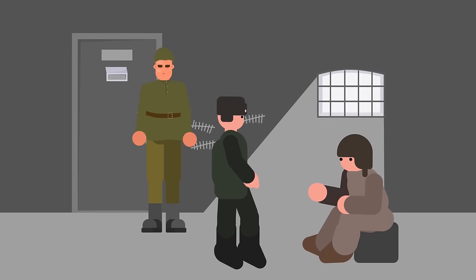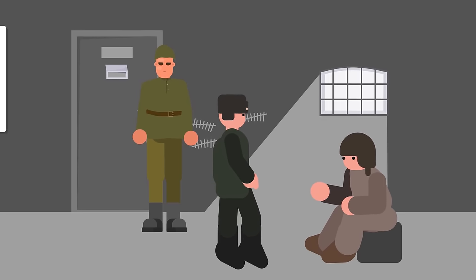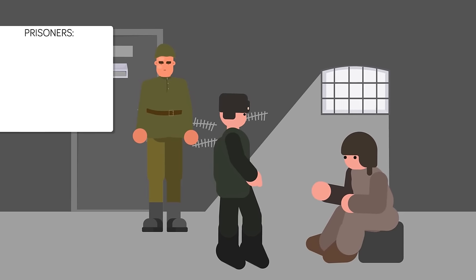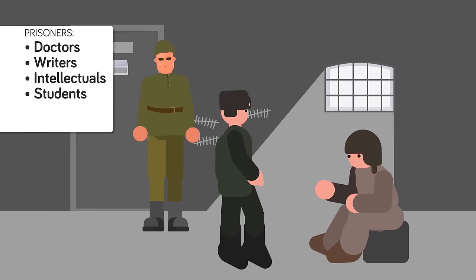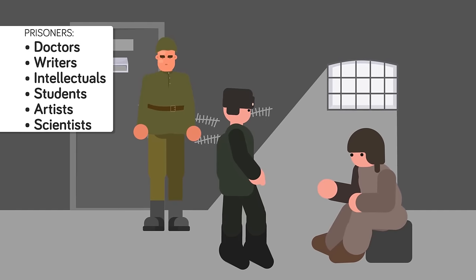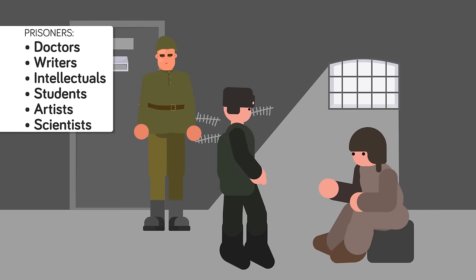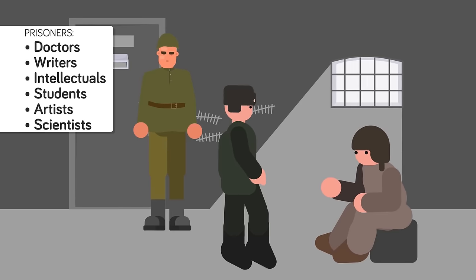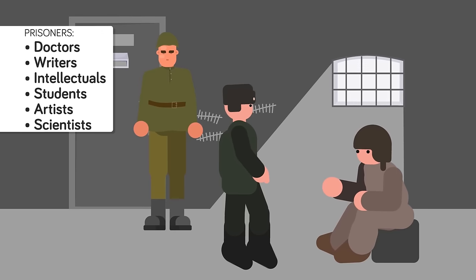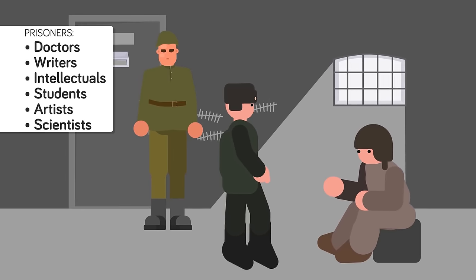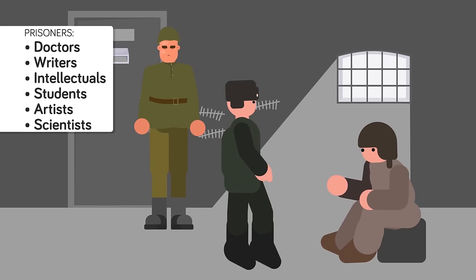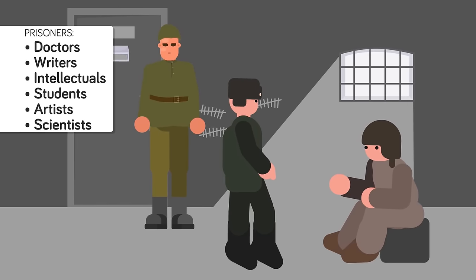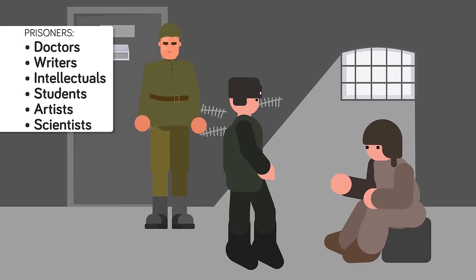As the purges continued and grew in scope, Stalin began rounding up doctors, writers, intellectuals, students, artists, and scientists. Anyone who could oppose Stalin publicly and whip up public support could not be tolerated. Yet it wasn't just the accused who were targeted for imprisonment, as anyone with direct ties to the accused could also be rounded up and thrown in a gulag.